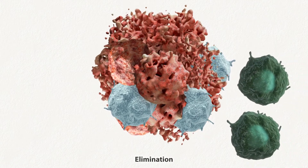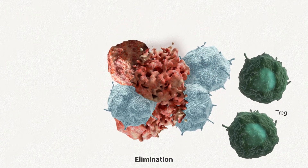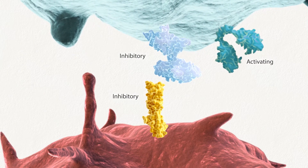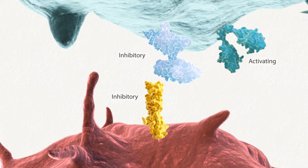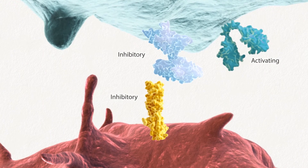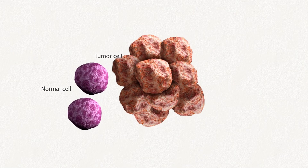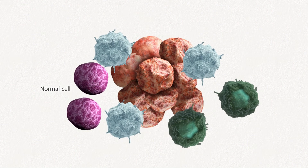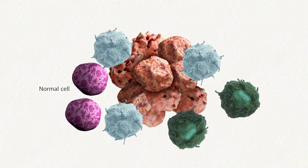The anti-tumor activity of immune cells, such as cytotoxic T cells, is regulated by activating and inhibitory signaling pathways. Activating pathways trigger an immune response. Inhibitory pathways, such as immune checkpoint pathways, provide a natural counterbalance to immune activation. This balance normally enables the immune system to attack tumor cells while sparing healthy cells. However, tumor cells may modulate these pathways in order to escape detection and destruction by these immune effector cells.